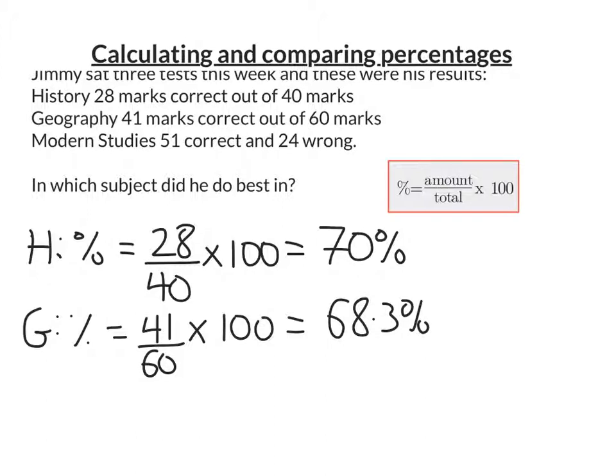And then lastly, we've got Modern Studies. Now, at the moment, we're told how many he's got wrong and how many he's got correct. It doesn't say how many marks there were in total.